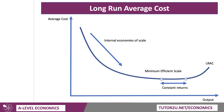It could be the case that for a range of output beyond that point, which I've labeled here, there could be constant returns to scale — in other words, the unit cost stays the same. But a firm may move beyond that point and start to see unit costs going up, and we call that internal diseconomies of scale or decreasing returns to scale.